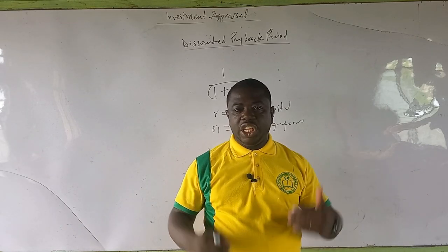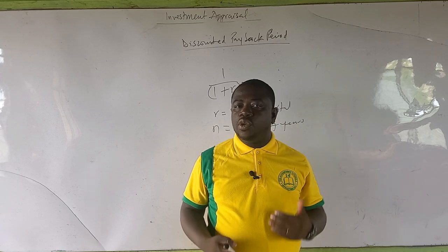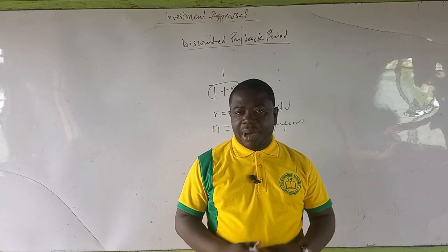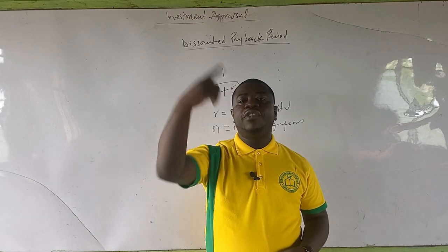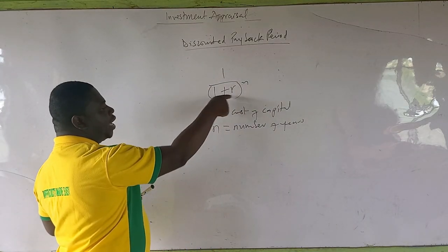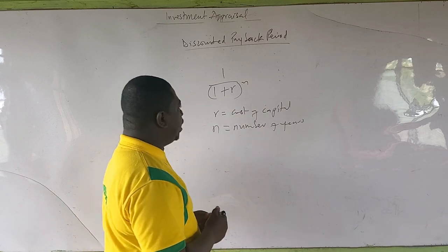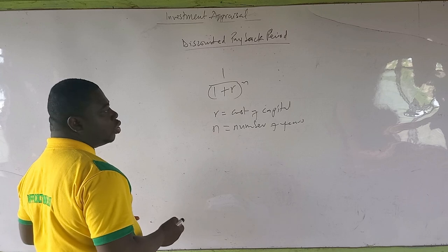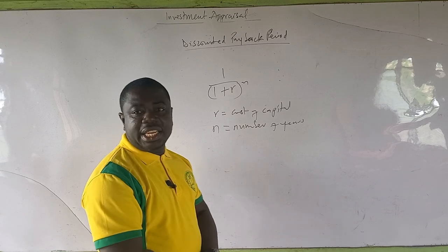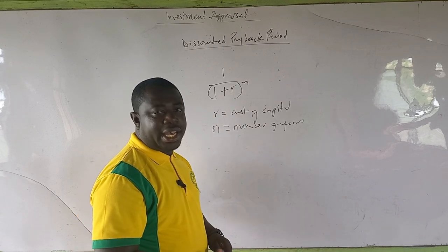We discount cash flows into today's terms so we can look at their purchasing power in today's terms, to determine the payback period rather than using the future value. We use 1 over (1 plus R) raised to the power N, where R is the cost of capital or the rate, and N is the number of years. Without wasting time, let's take a question straight away to illustrate this, since we've already studied the payback period — I'll teach the discounting as I solve the question.